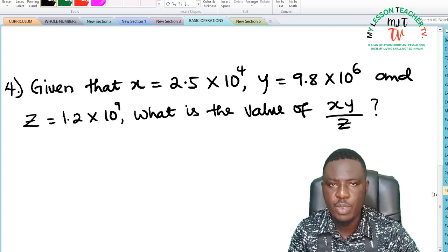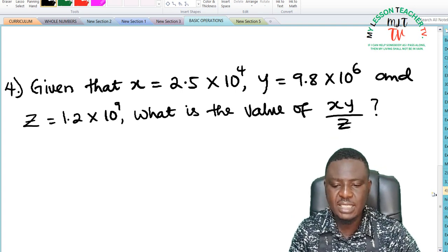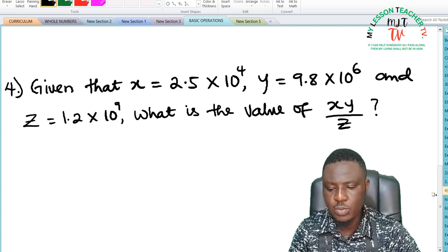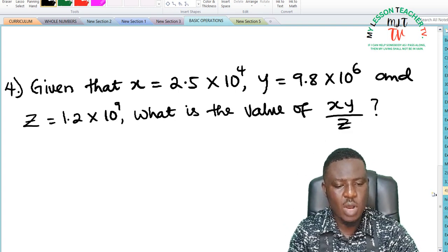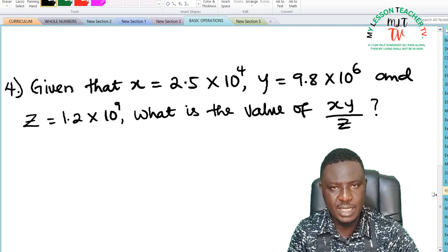Example 4. The question says, given that x is equal to 2.5 times 10 to the power of 4, y is given as 9.8 times 10 to the power of 6, and z is said to be 1.2 times 10 to the power of 9. What is the value of xy divided by z?